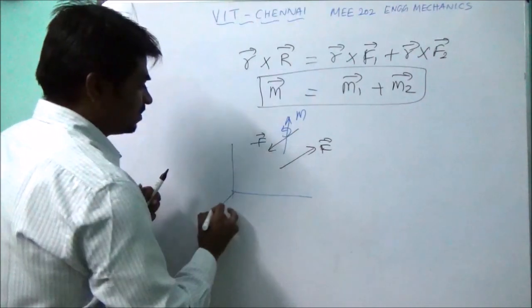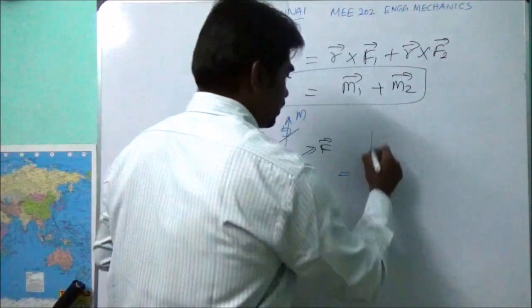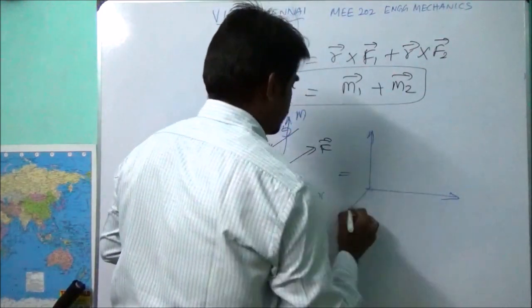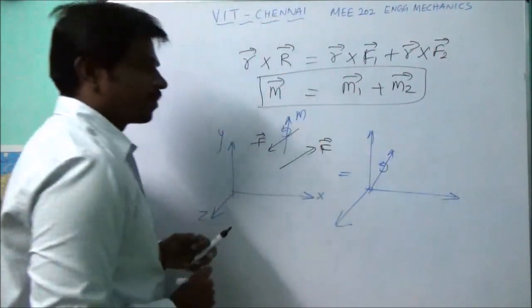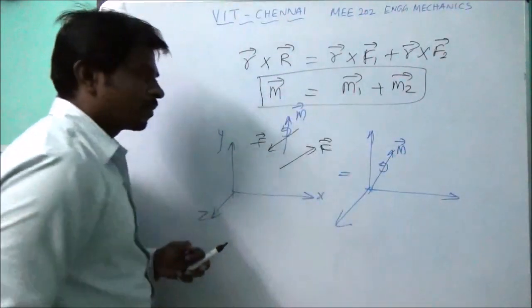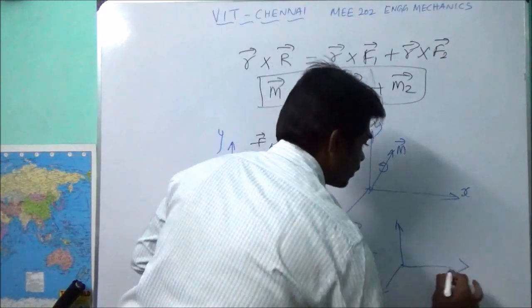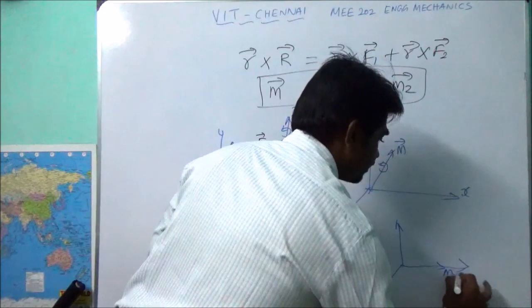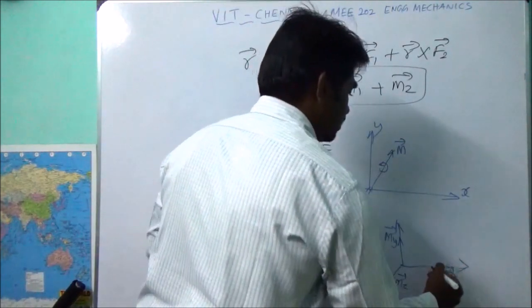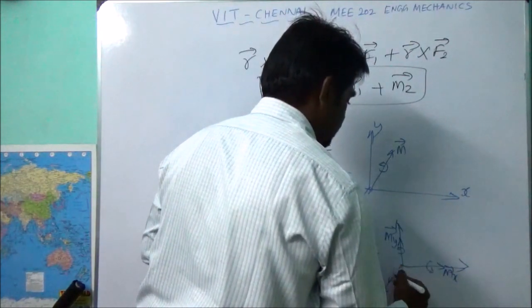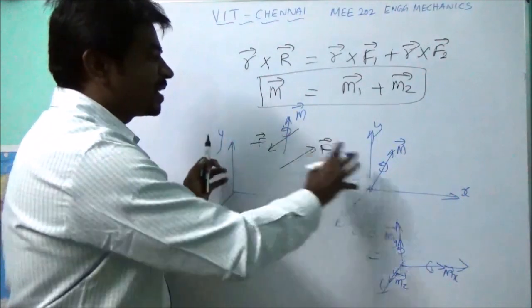If we express this in a coordinate system, since the couple is a free vector, it can be brought to any location. The couple vector can also be expressed in rectangular components: Mx vector, My vector, and Mz vector. The moment of a couple can be expressed in rectangular components, with each component possibly being anti-clockwise.